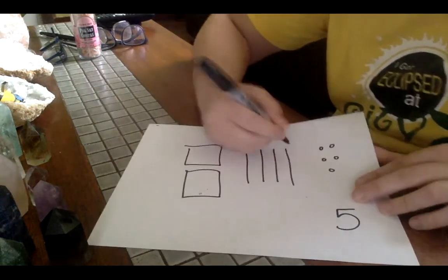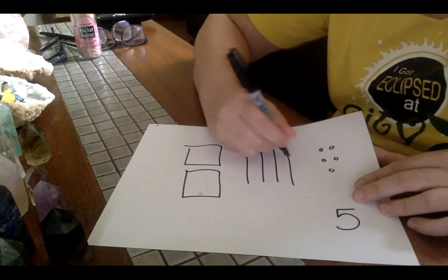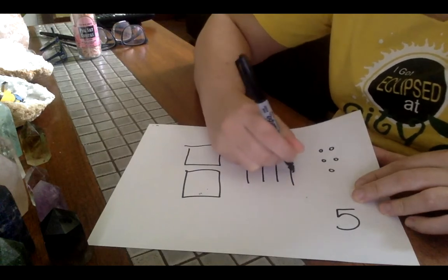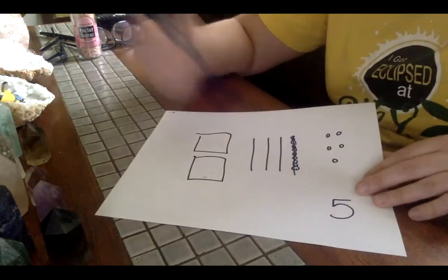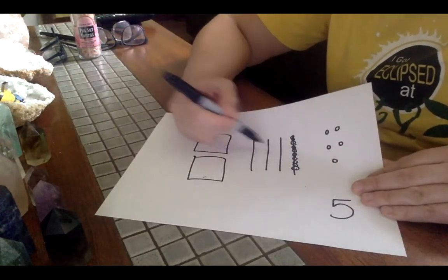These are our tens. And you'll be able to see four, five, six, seven, eight, nine, 10. We have 10 units to make a 10. So we would have 10, 20, 30, 40.